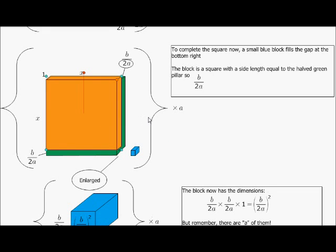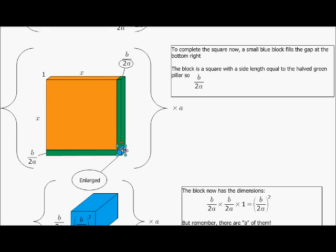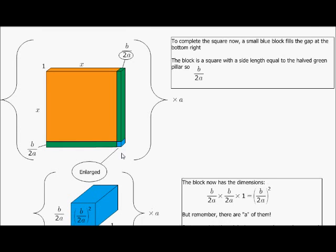And now we see — to complete this square, if we wanted to complete this square, we had to go and borrow this red piece. Originally I only had the orange and the green. So somewhere I had to go borrow this little square here, and it must now fit into that part. And now I've completed the square. Remember, this square will have the same width and length — its face will be a square — and it will be b over 2a by b over 2a. That's why it's a square.